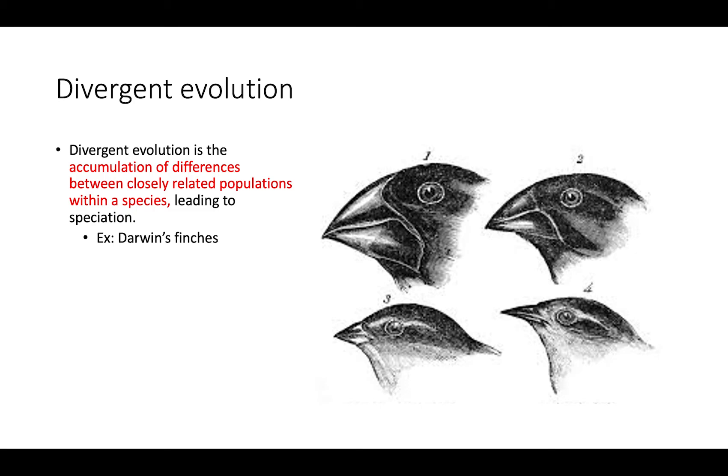Whereas convergent, everything is converging to the same point. You have unrelated species that are adapting to their environments in similar ways, all developing similar adaptations. So you're going from a bigger picture down to a narrow picture with those organisms.